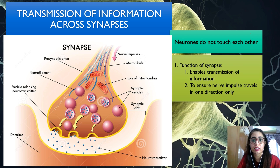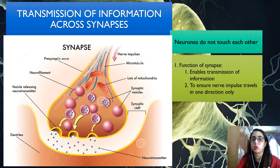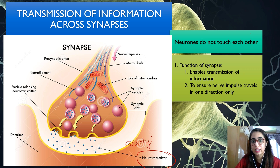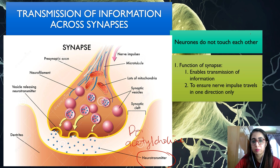The function of the synapse is to enable transmission of information from one neuron to another, or from a neuron to a muscle cell or gland. It ensures nerve impulses travel in one direction only. Since nerve impulses are electrical in nature, they cannot directly cross the synapse. Instead, a nerve impulse from the sending neuron crosses the synapse chemically by releasing neurotransmitters. Examples of neurotransmitters include acetylcholine, noradrenaline, serotonin, and dopamine.